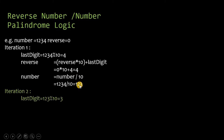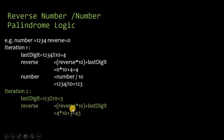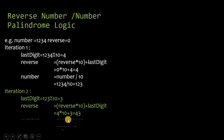Using these two values we move on to the next iteration. We extract the last digit: 123 mod 10 is 3. Then reverse equals reverse times 10 plus last digit. Reverse was 4, so 4 times 10 plus 3 equals 43. Remember to take the reverse value from the previous step. Then remove the last digit: 123 divided by 10 gives 12.